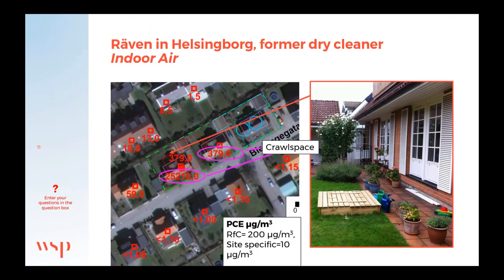Indoor air was also sampled — not just one time — and also air in the crawl space under the building was investigated and sampled. The concentrations measured were much higher than the toxicological reference value of 200 micrograms per cubic meter — we measured 379, so it was a really big problem. This villa and the neighboring villa were already mitigated during the investigation phase with a ventilated floor and so on. The villa has now been demolished, but that is because of other things.